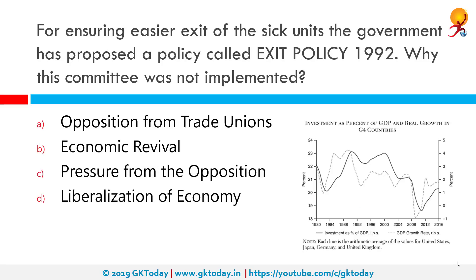For ensuring easier exit of sick units, the government proposed a policy called Exit Policy 1992. Why was this policy not implemented? The correct answer is opposition from Trade Unions. Exit Policy 1992 refers to the right or ability of an industrial unit to withdraw from or leave an industry, or in other words, to close down. The proposal to introduce it was first mooted in 1991 when it was felt that without labor market flexibility, efficient industrialization would be difficult to achieve.